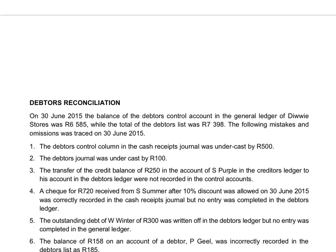Good morning. We will pay attention to debtors reconciliation today. Before we start with the exercise, we will just recap again. If we have the debtors journal or any of your other journals, it means that you will have sales — for instance, 100 rand to Now, and 400 rand to Stain — and we will add up and work out what the total is.